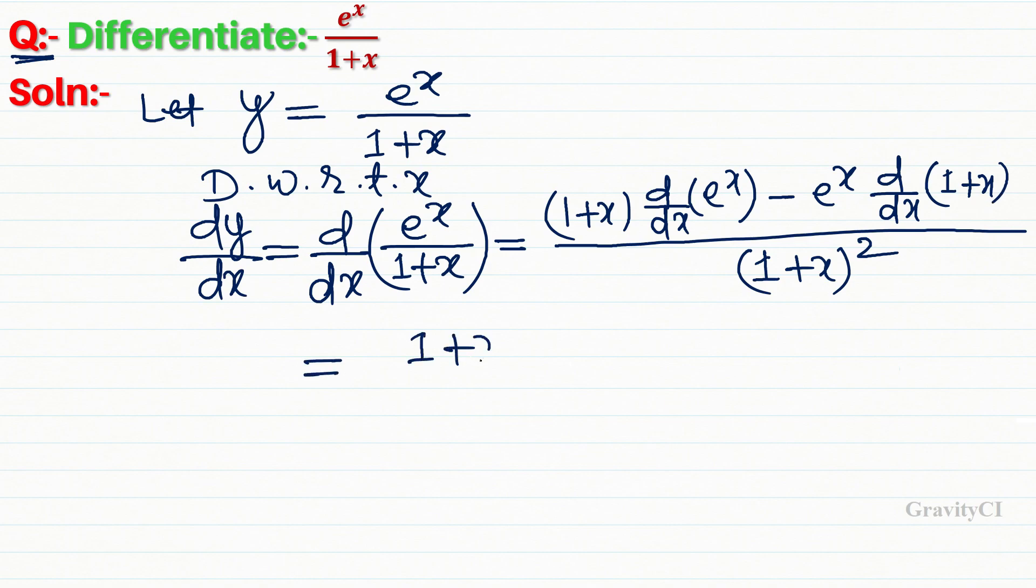This equals 1 plus x times e to the power x, since the derivative of e to the power x is e to the power x itself, minus e to the power x times 1, since the derivative of 1 plus x is 1.